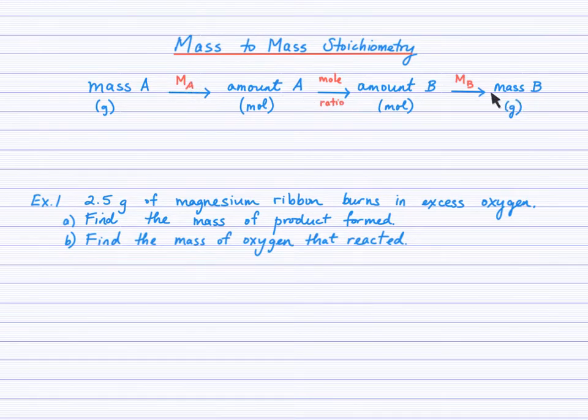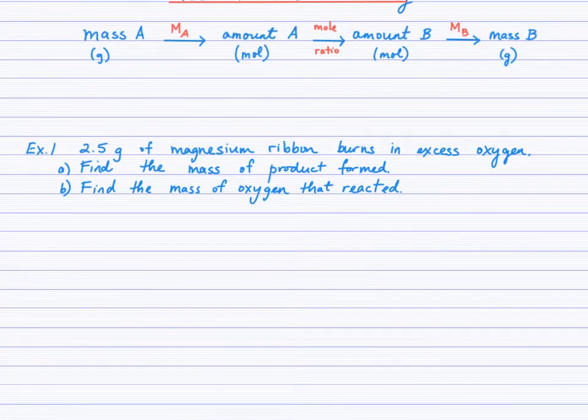Now why do I have an A and a B through here? Well, I'm just saying that substance A is that first substance that you're given the mass of. So in this case, 2.5 grams of magnesium. So from the mass of magnesium, we'll need to use the molar mass of magnesium to find the moles of magnesium. Then we'll use the mole ratio to find the moles of whatever our second substance is. In question A, we're going to find the mass of the product formed. So when we write a balanced equation, we'll know what the product is and convert with molar mass to finding the mass of that product. Or in part B, we'll start off again with the magnesium ribbon and work our way to moles of magnesium ribbon, then find the moles of oxygen, and then take that through to the mass of oxygen. So I'll work through this example, but essentially that is the fundamental pathway that we use for all of these problems.